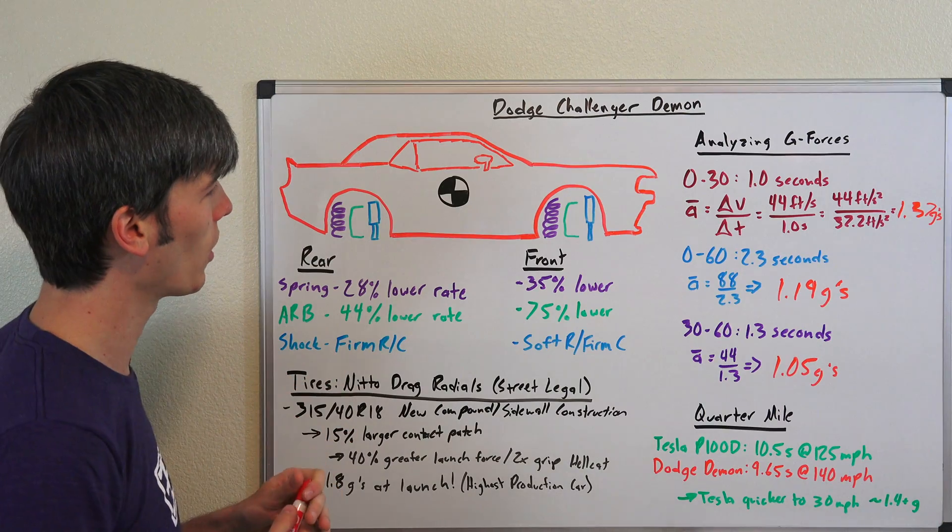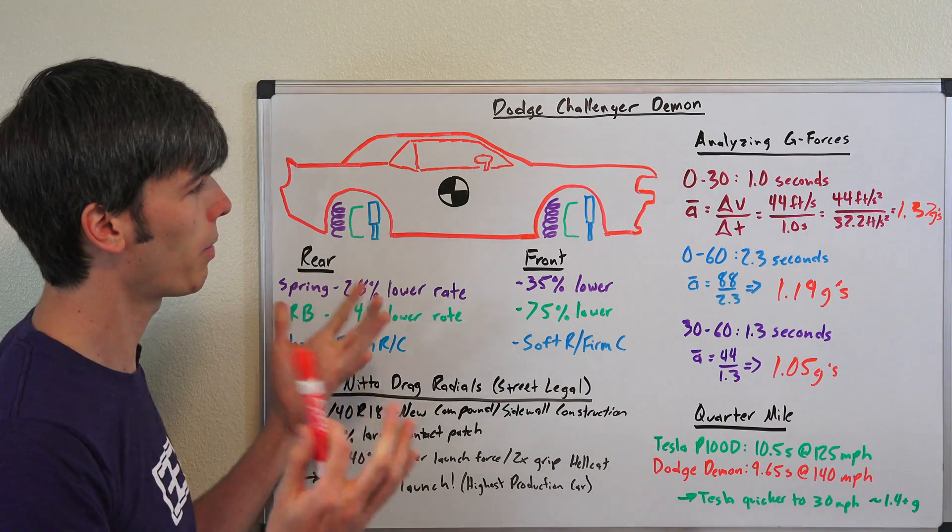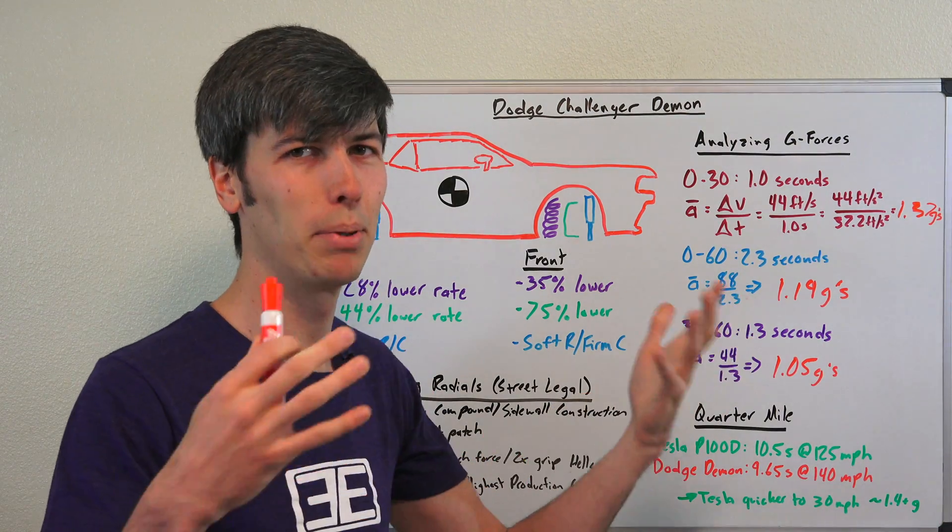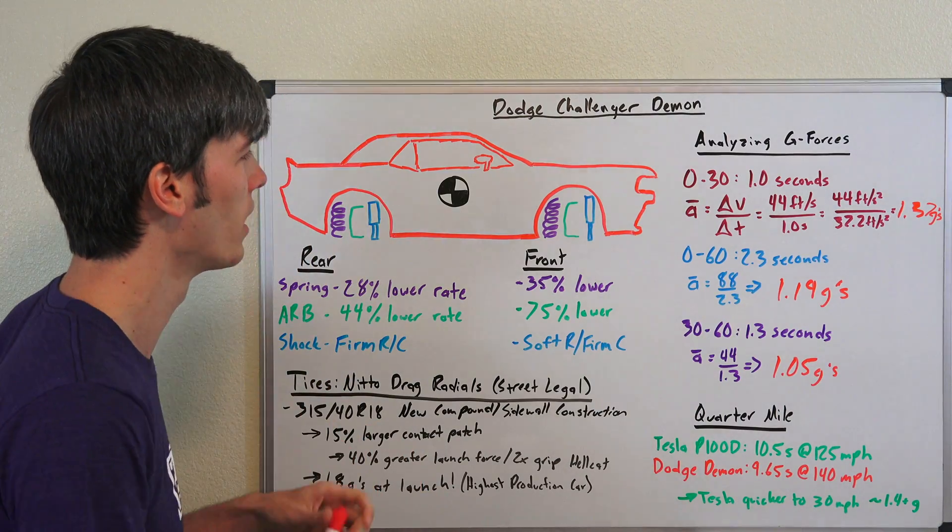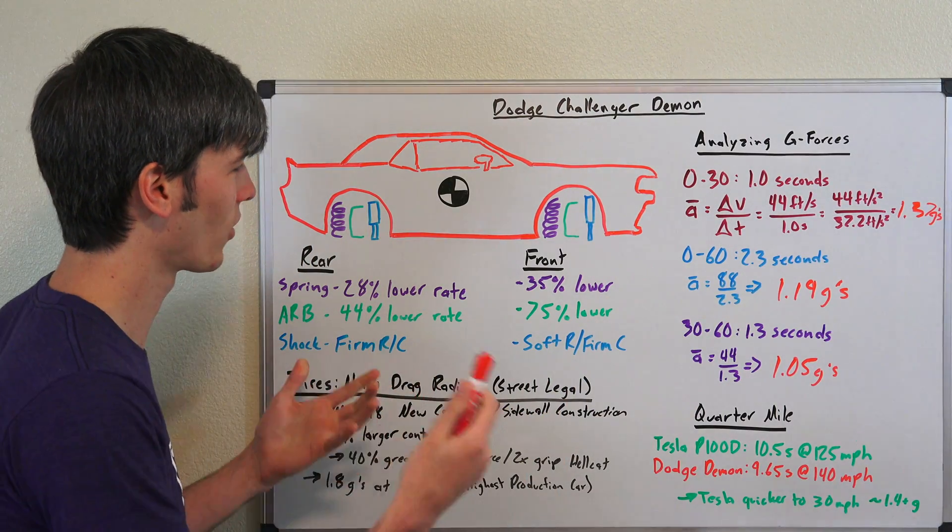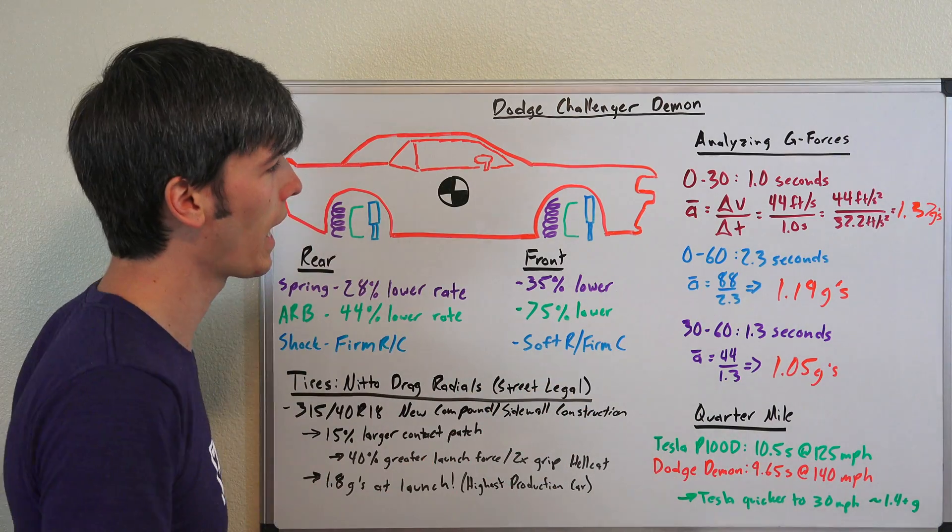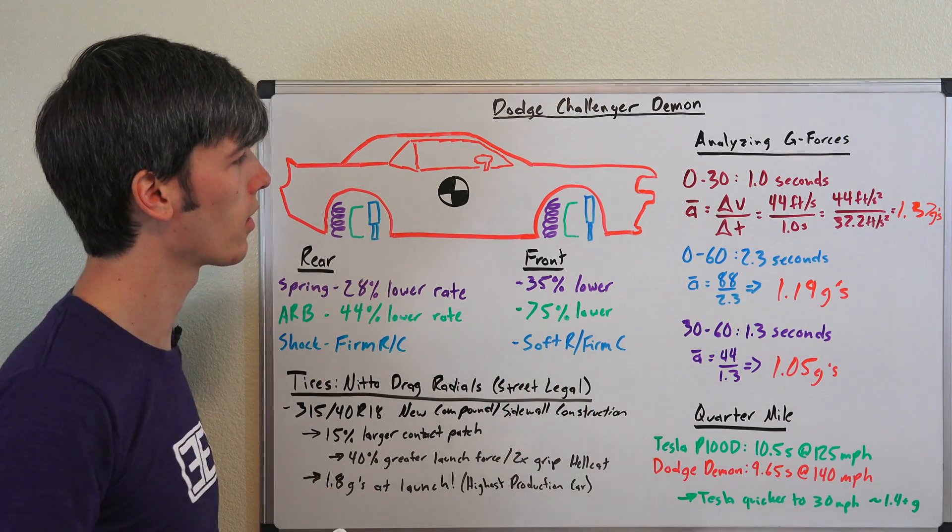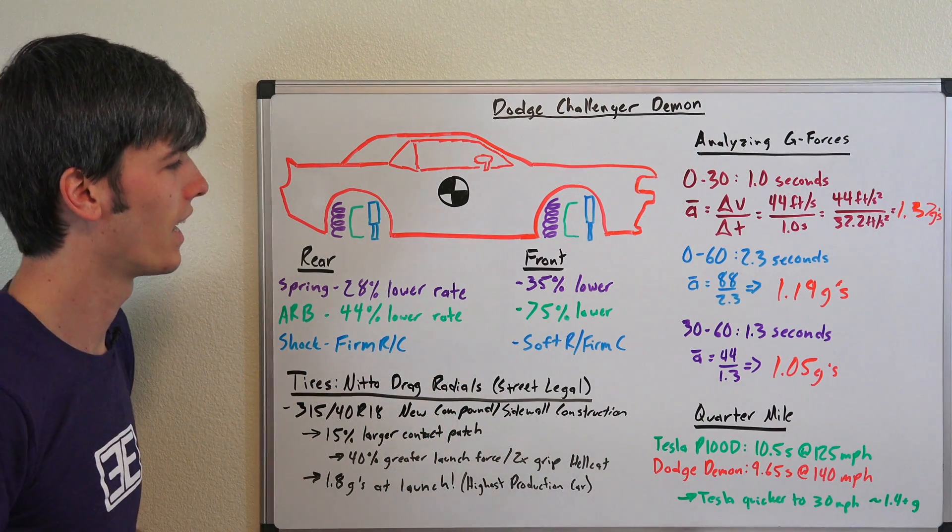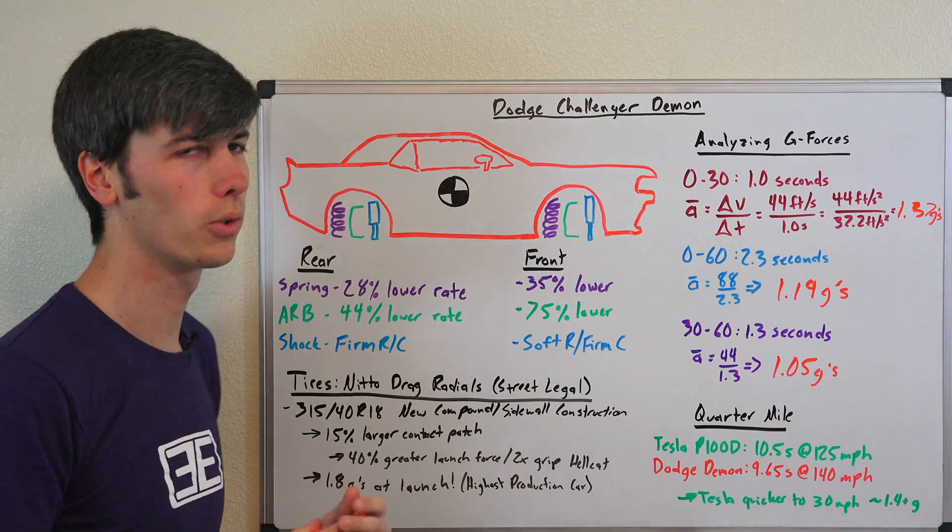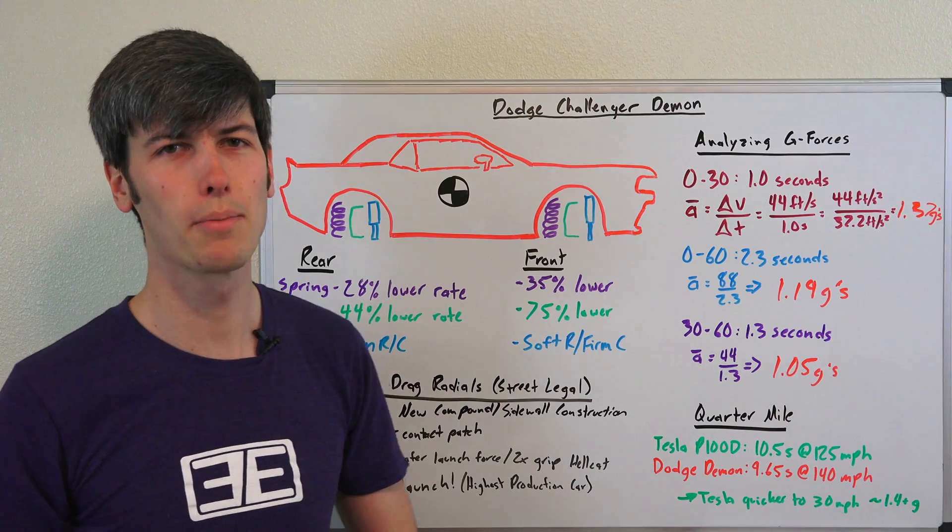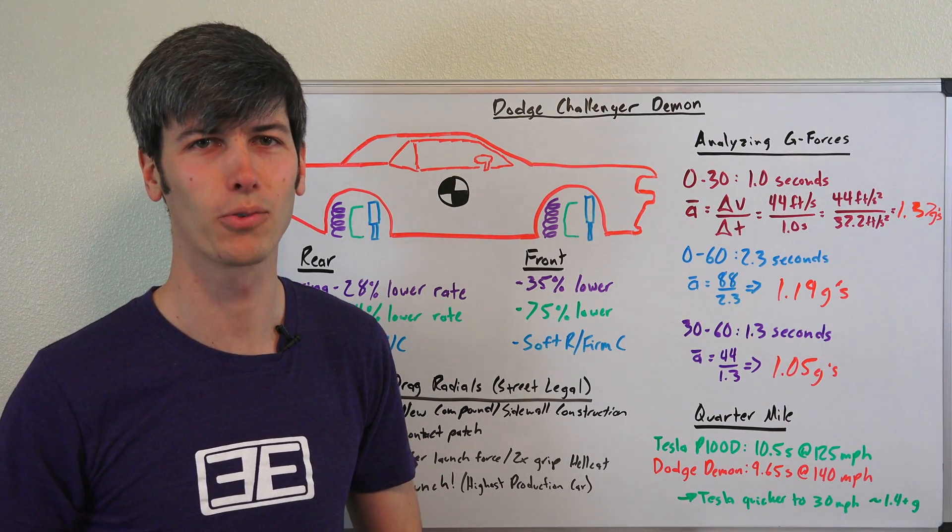So either way, it's an insane car. Very cool what Dodge has done. It's a passion project. It's meant to build hype from a marketing standpoint about the brand Dodge. And it's certainly doing that. It's cool to see a company just throw everything we have at the world's fastest drag car and just go for it. And they did it. They achieved the results. And I think that's cool to do. If you guys have any questions or comments, feel free to leave them below. Thanks for watching.